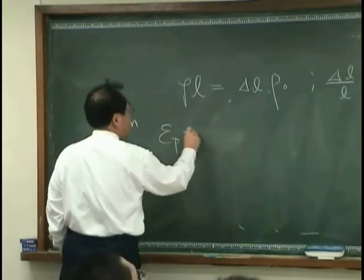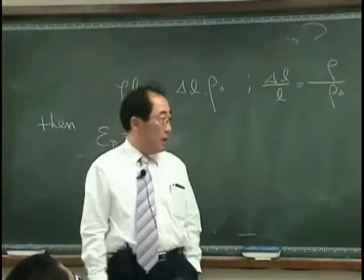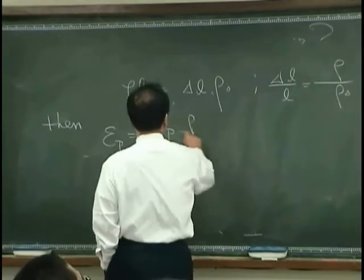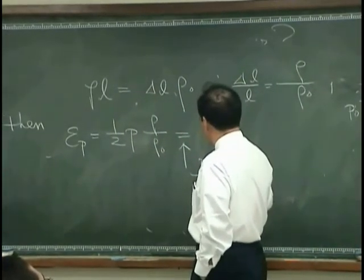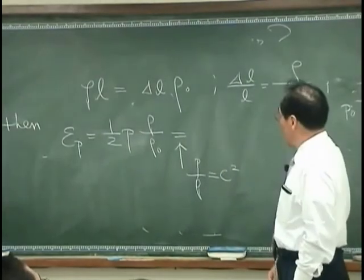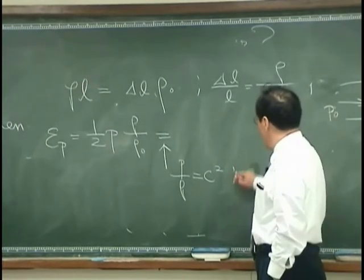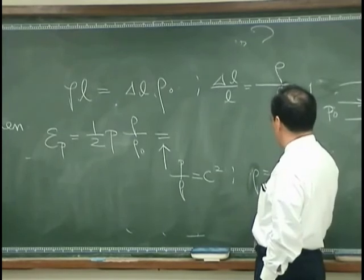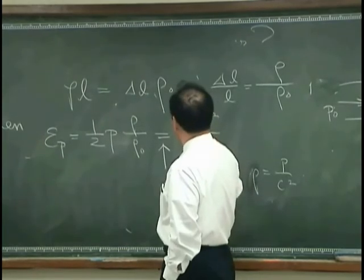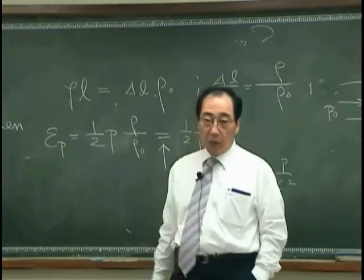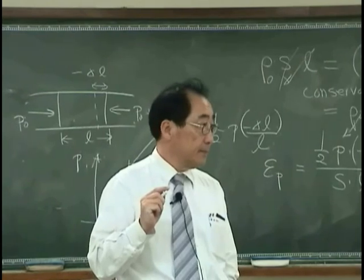potential energy density is one half P excess pressure square and then rho over rho zero. And I use P over rho is c square. Then means that rho is P over c square, so I have that is one half P square over rho zero c square. That is potential energy except the minus and plus sign. Okay.